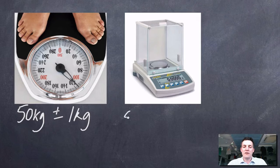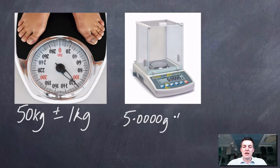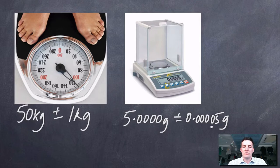I could weigh a 5 gram object on this balance and discover it weighed exactly 5 grams. The uncertainty in this reading comes from the balance having to do some rounding, and we take half that last decimal place. So here's our absolute error for that reading.